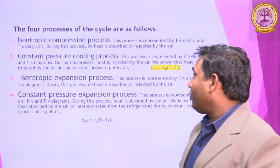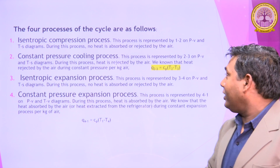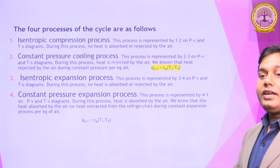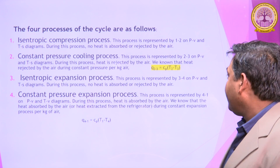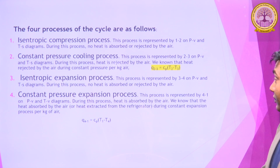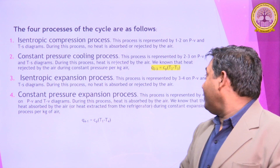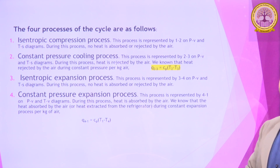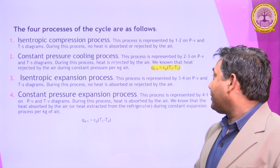The second process is the Constant Pressure Cooling Process. In this process, the P-V Diagram shows 2 to 3 as a Constant Pressure Process. In the Constant Pressure Process, heat is rejected from the system. This is Q23 equal to Cp times (T2 minus T3). This is the heat rejection process.